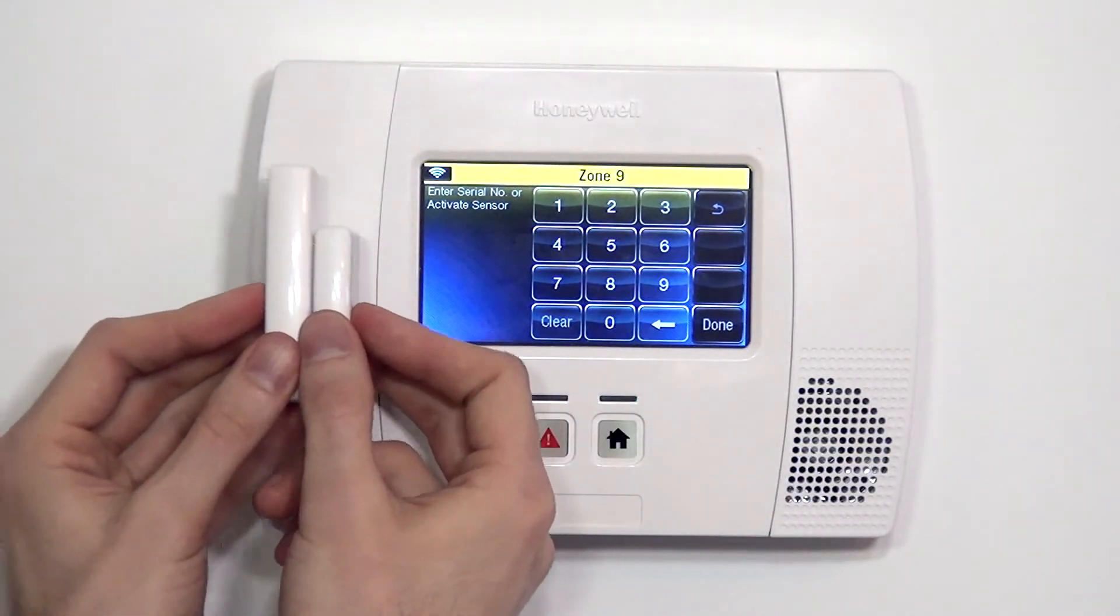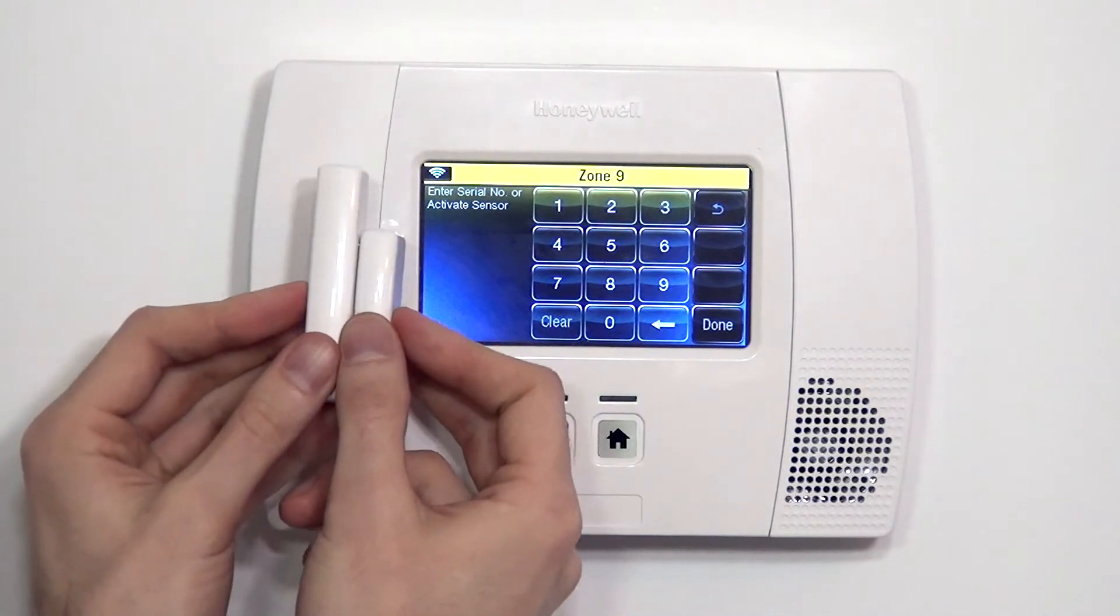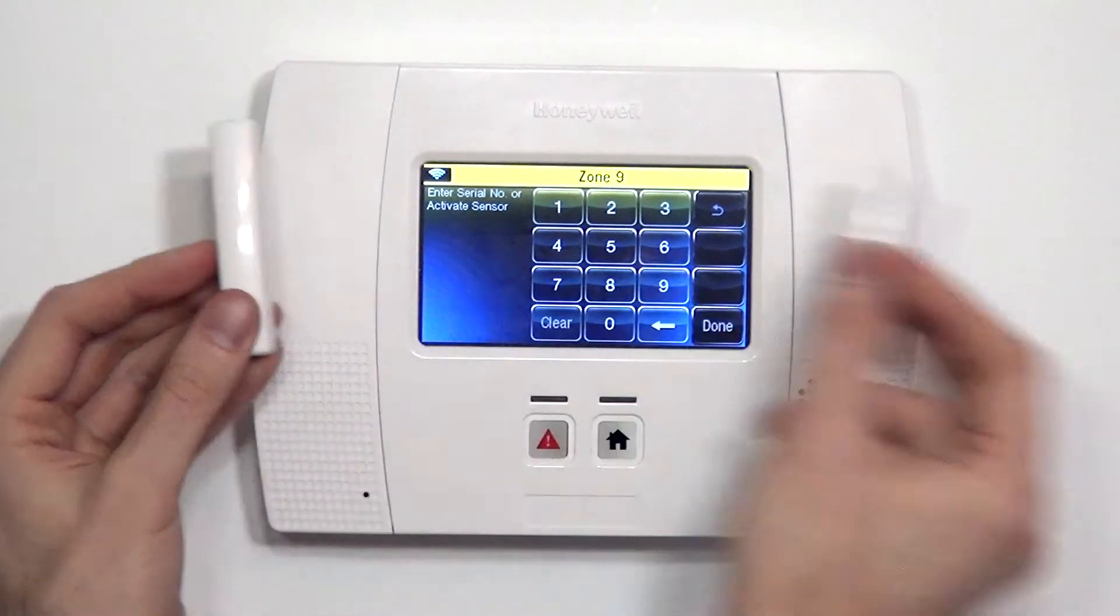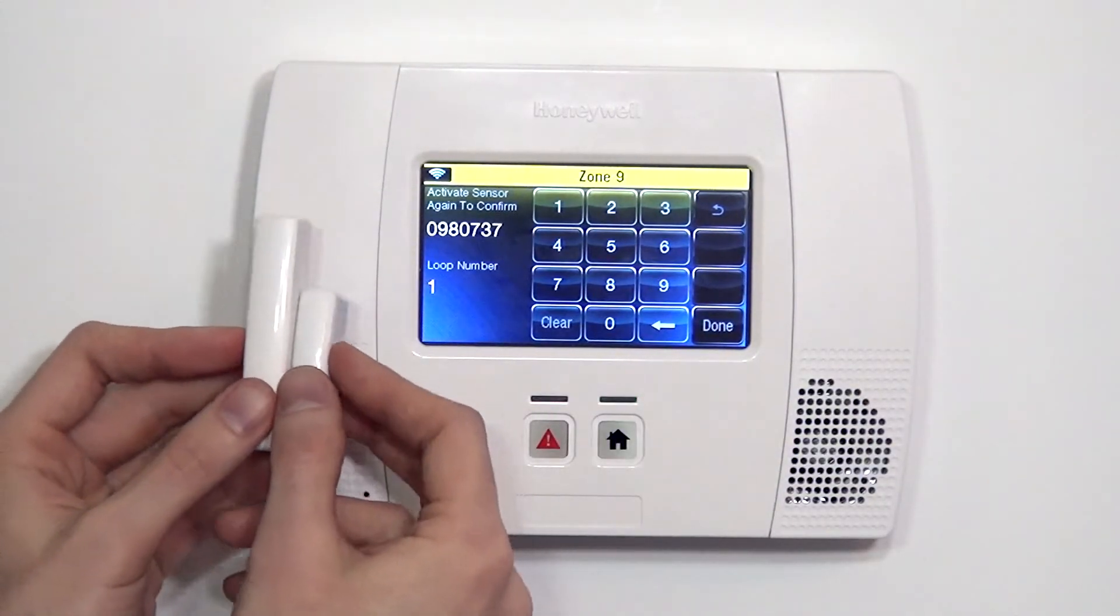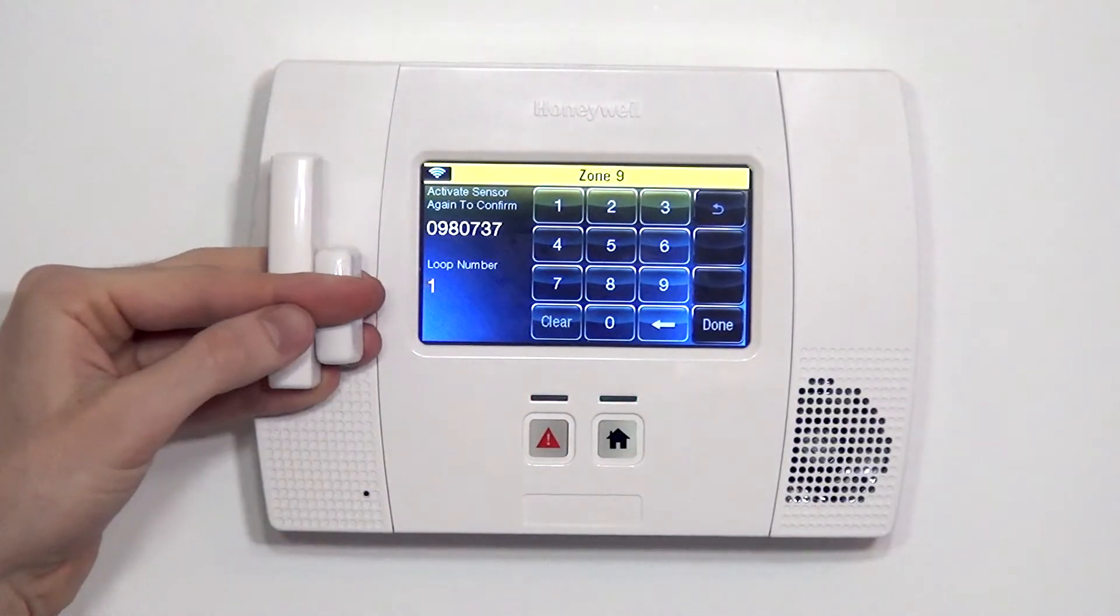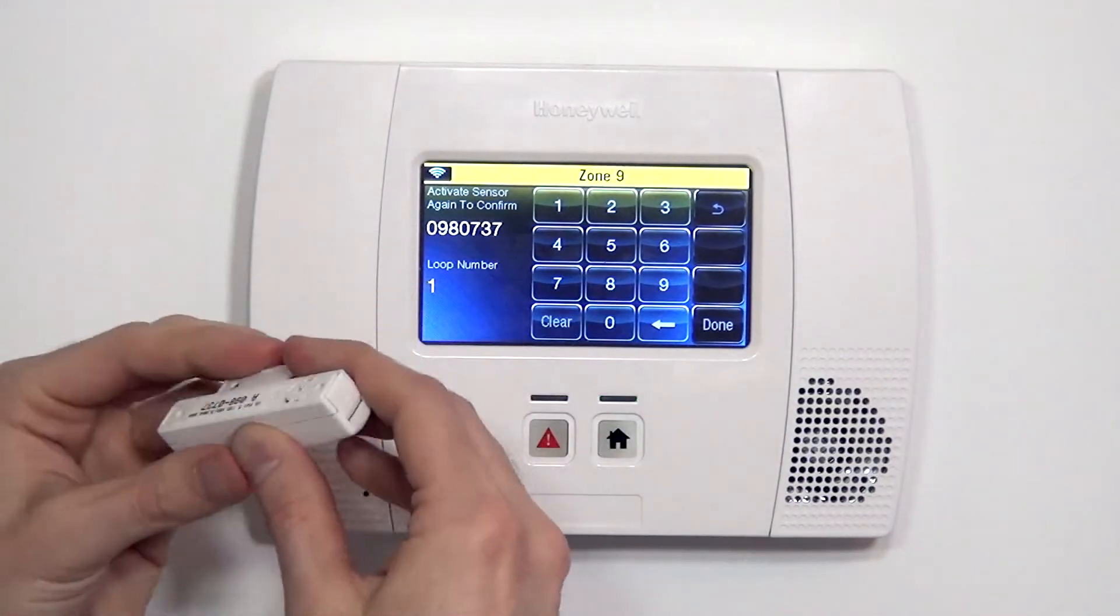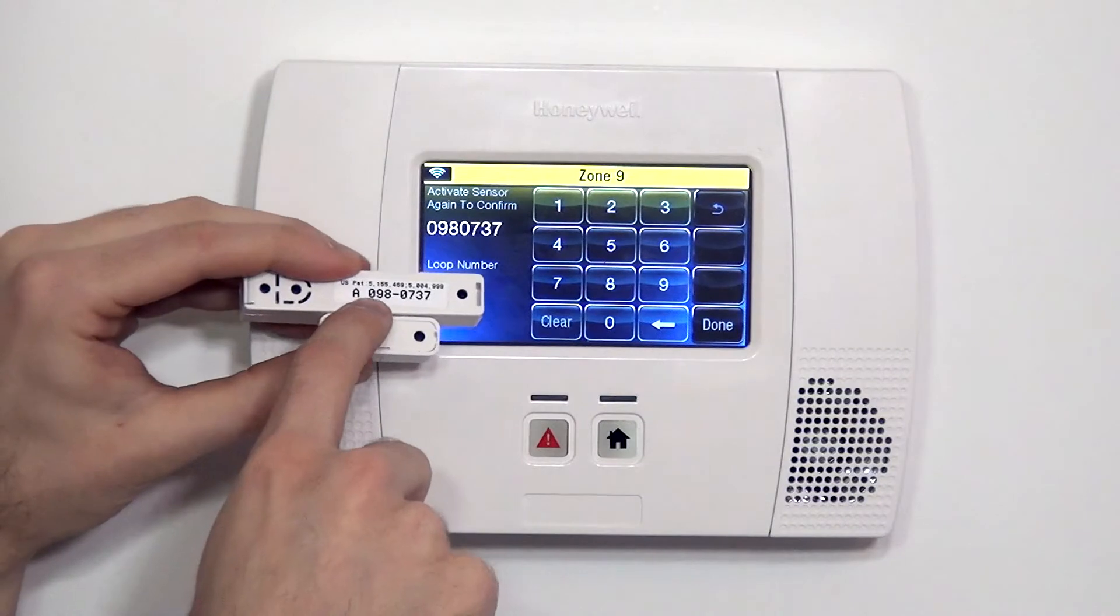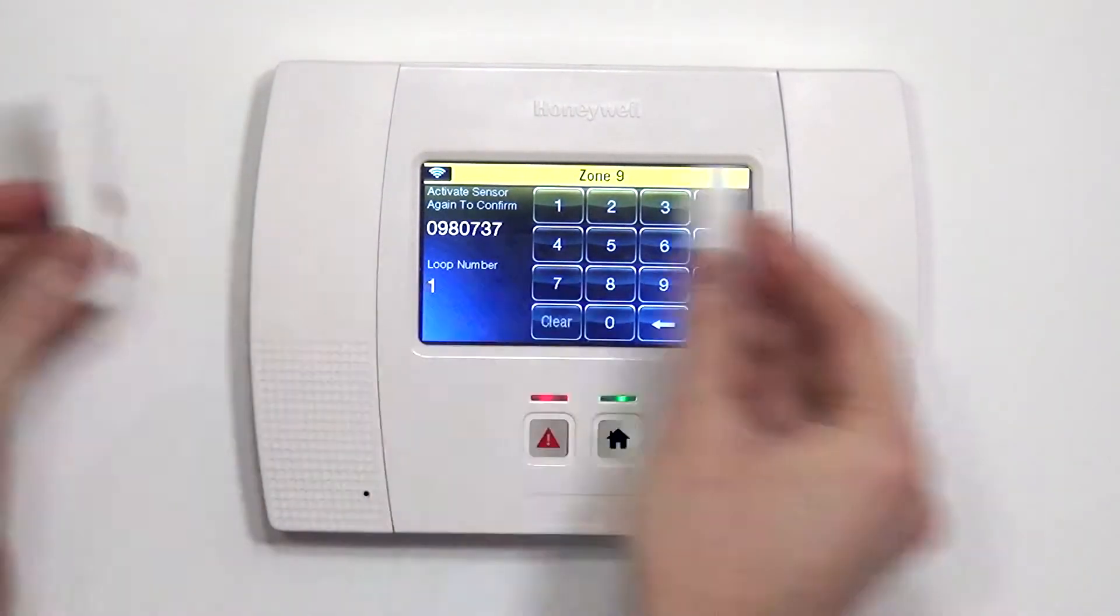If this is mounted on your door, you would simply be opening and closing your door. If you're doing it on the bench test, you simply fault the sensor by putting the magnet close, pulling it away. That's number two. We can see now we have loop number one, which is the proper loop when enrolling a 5820L. We have the verified serial number, which matches the serial number on the device, 0980737. And then we do one third and final activation.